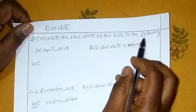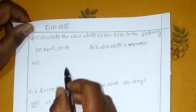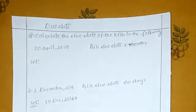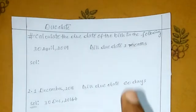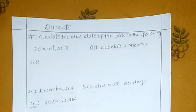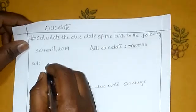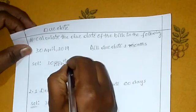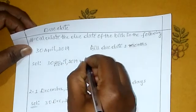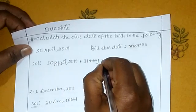Calculate the due date of the bill in the following example. Date: 30 April 2019, bill due date is 2 months. So, 30 April 2019 plus 2 months gives us 30 June, then we add 3 grace days — 30 April 2019 plus 31 May plus grace days, 3 days added.